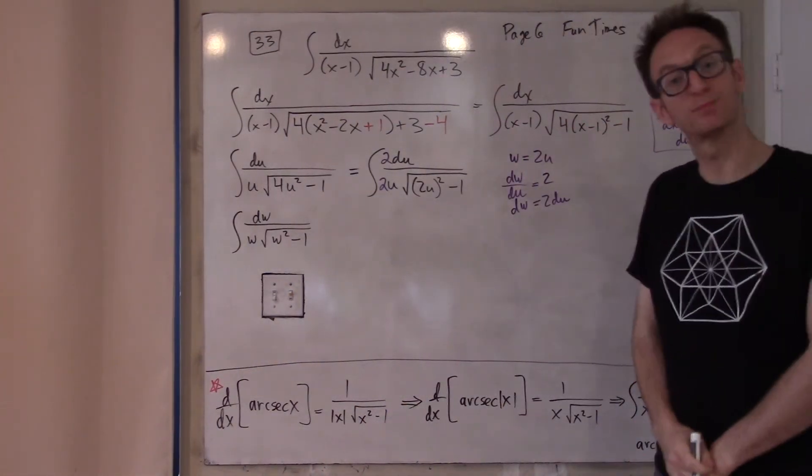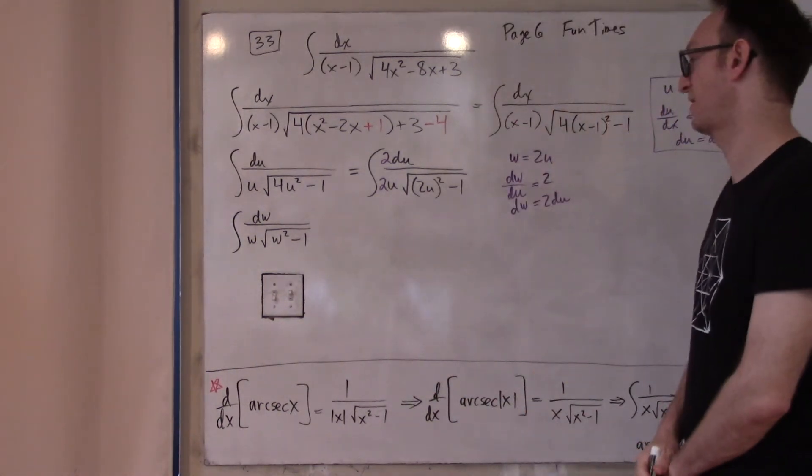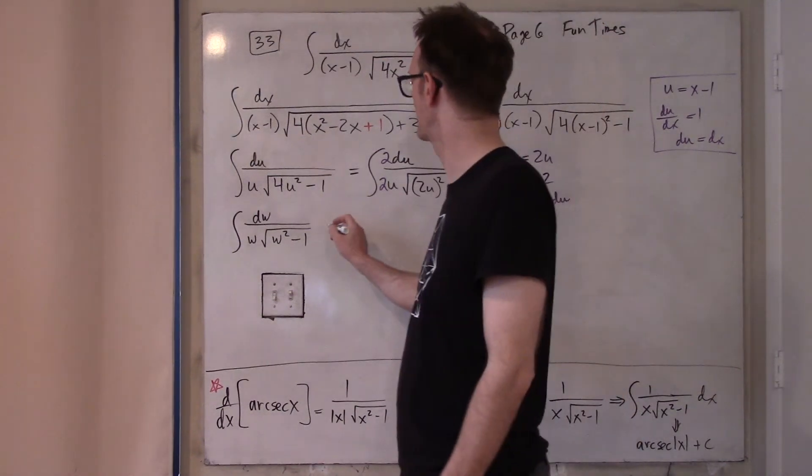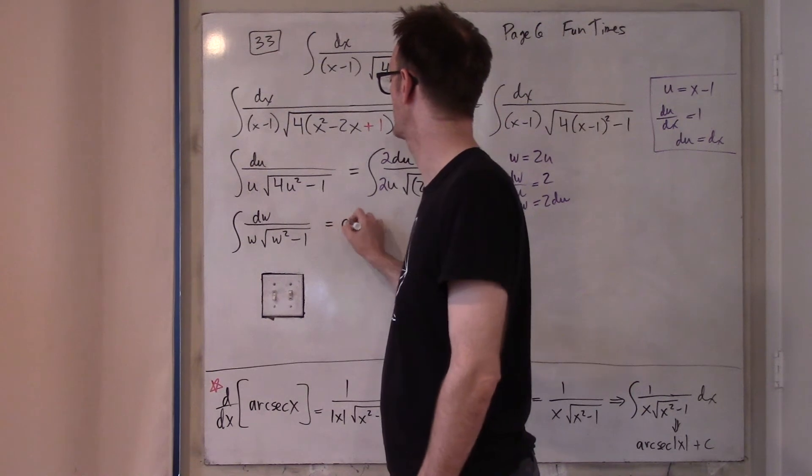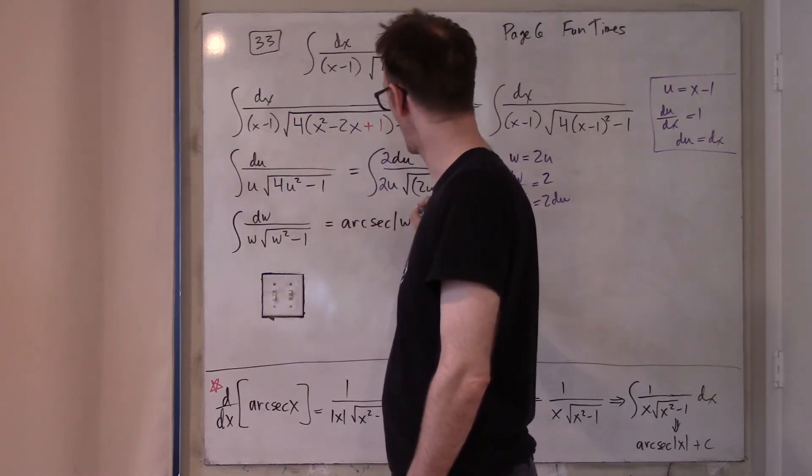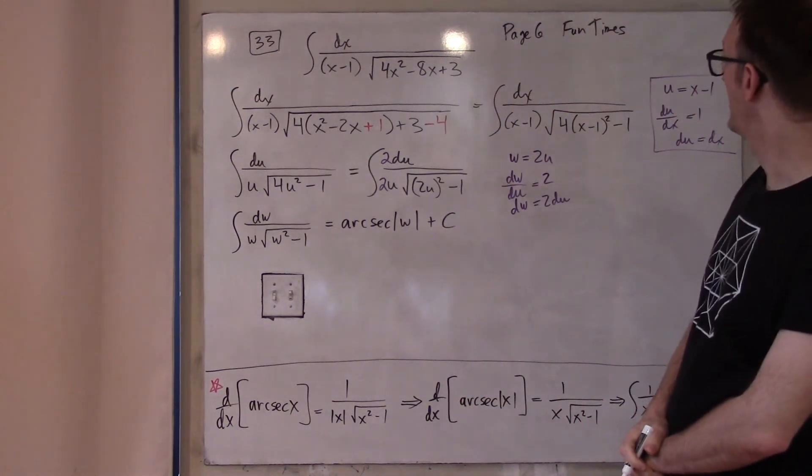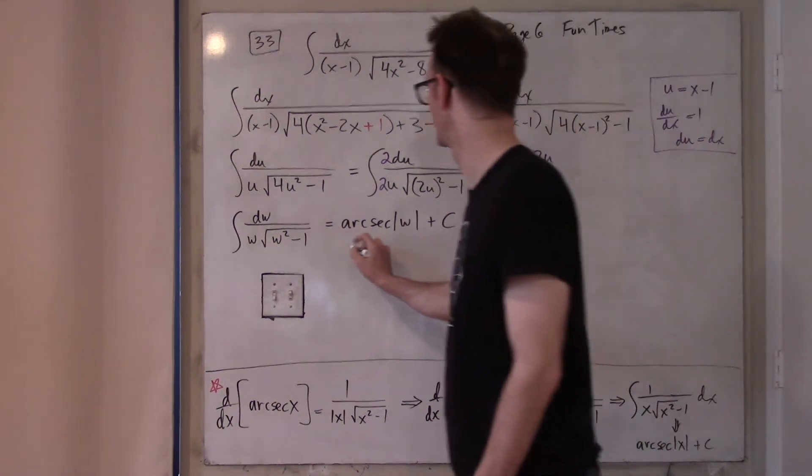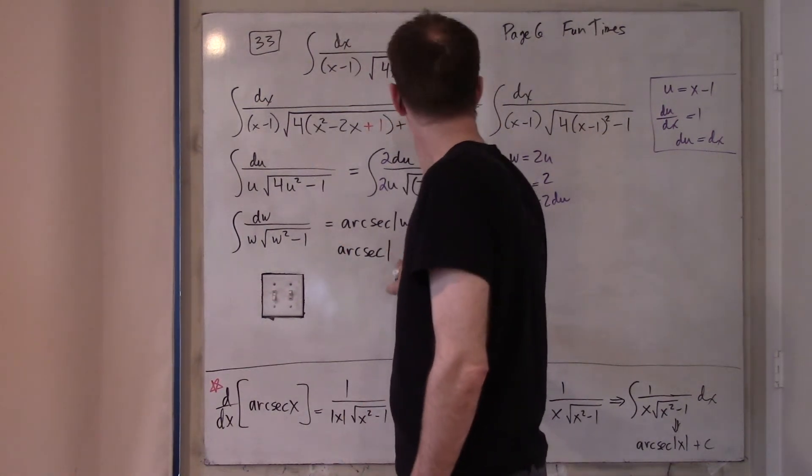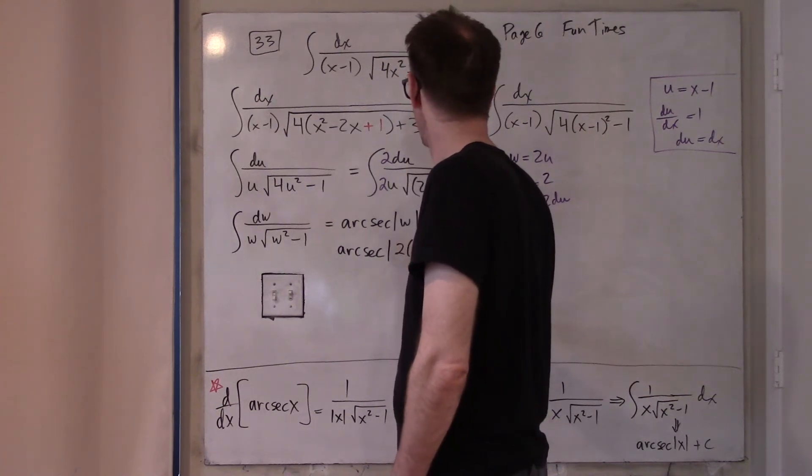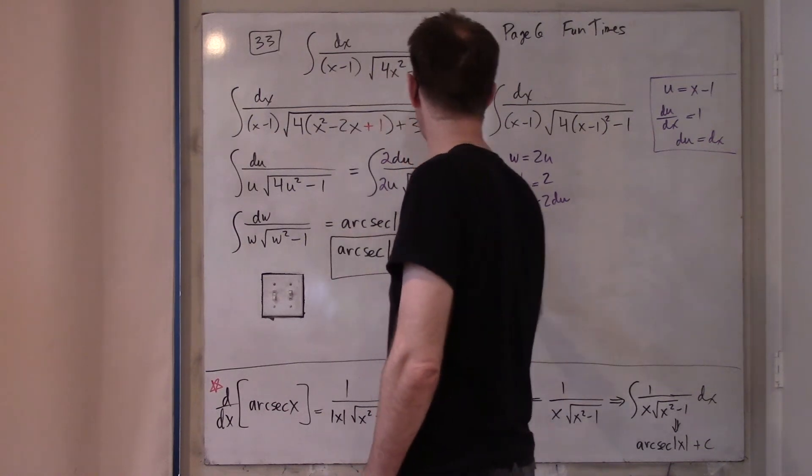And now, I simply reach for the fact that this is the antiderivative of arc secant. So, the answer to this problem is arc secant w. Technically, it's arc secant absolute value of w. And what is w? It's 2u. And what is u? It's x minus 1. So, this becomes arc secant absolute value of 2x minus 1 plus c. And, to me, that's just kind of the answer.